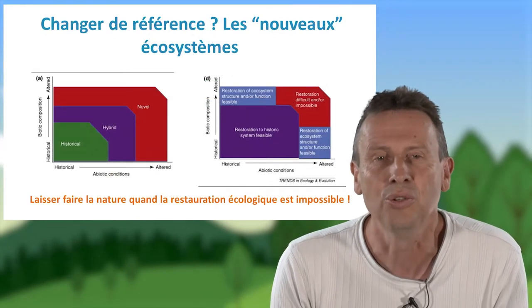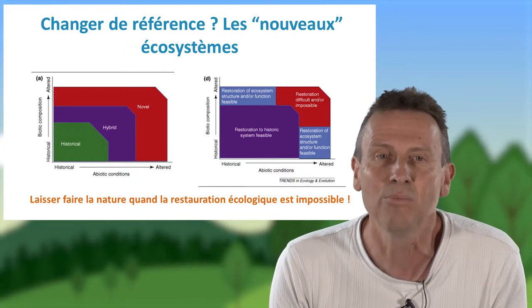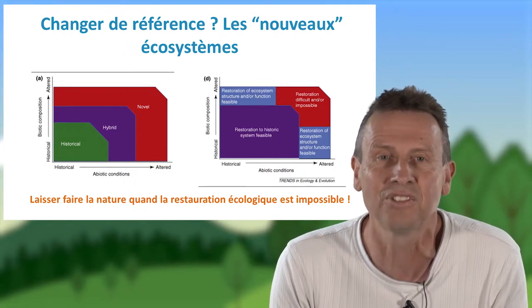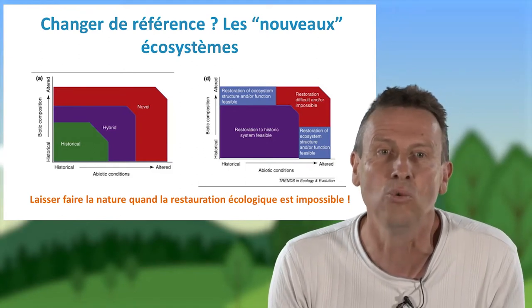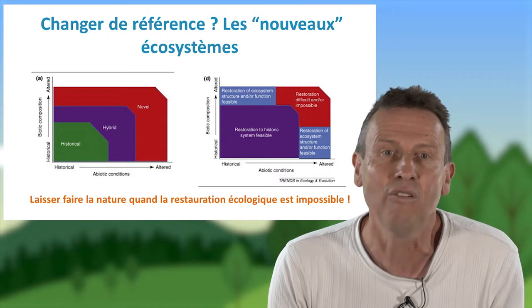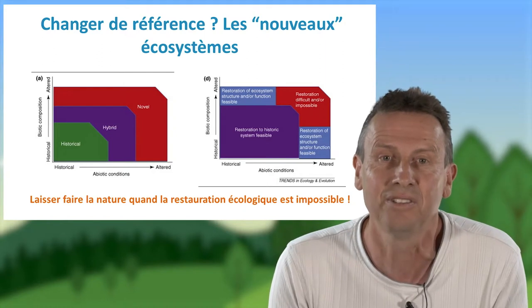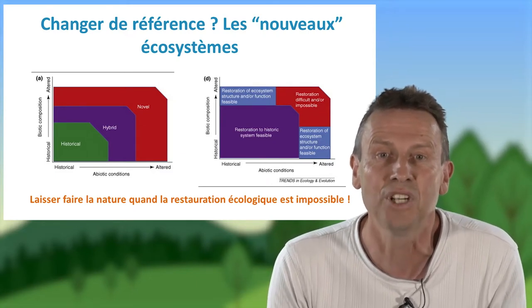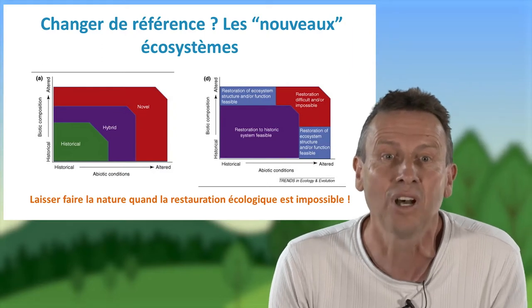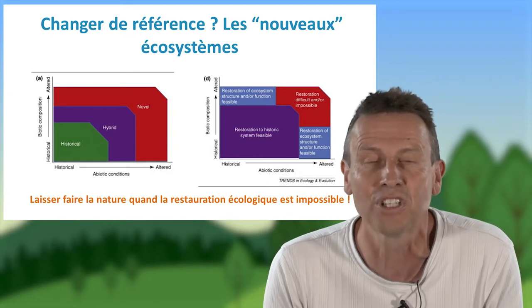Face à ce constat général, une alternative a été proposée à la restauration active des écosystèmes passés : accepter notre incapacité à restaurer certains écosystèmes quand les niveaux de dégradation ont été trop forts, c'est-à-dire quand l'habitat a été trop perturbé ou qu'on a perdu trop d'éléments. Dans ce cas, on va parler de nouveaux écosystèmes, tout à fait viables, qui ont certes perdu des espèces et des fonctions, mais qui pourront à l'avenir les regagner. L'objectif de la restauration dite passive ou spontanée sera alors de laisser faire la nature telle qu'elle s'exprime aujourd'hui, intégrant les changements d'usage et les changements climatiques.